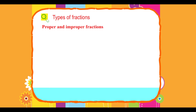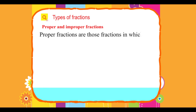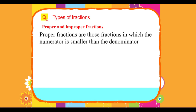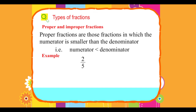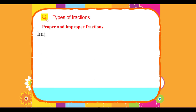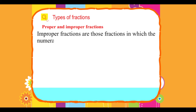Proper and improper fractions. Proper fractions are those fractions in which the numerator is smaller than the denominator, that is numerator less than denominator. Example: 2 upon 5 — 2 less than 5; 7 upon 9 — 7 less than 9 — are all proper fractions.